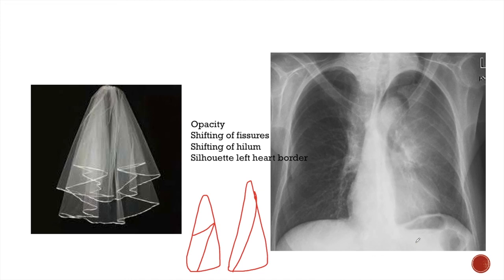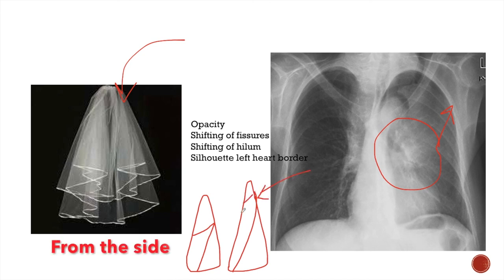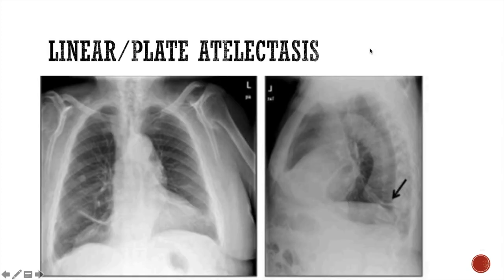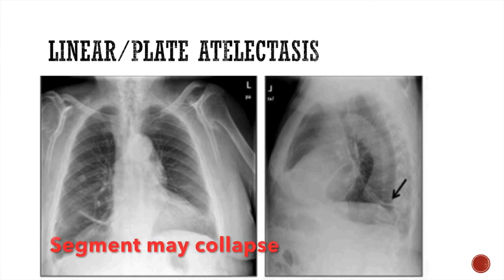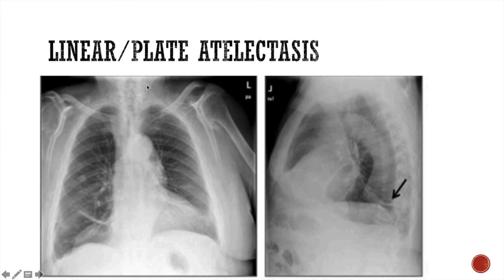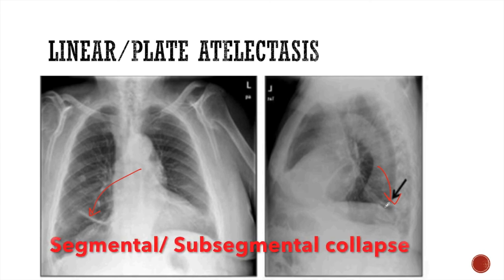The left upper lobe collapse is unique on its own. It appears as an opacity in the left lung which looks like a veil. The opacity is more towards the hilum and lesser towards the periphery, because the left upper lobe occupies most of the left lung vertically. When this lobe collapses, most of the left lung appears opaque. Sometimes the whole lobe may not collapse and only a segment or part of the lobe collapses — this is called segmental collapse. In segmental collapse, we see only linear structures in the lungs, representing collapse of part of the lung smaller than a lobe. These are called segmental or subsegmental collapse.